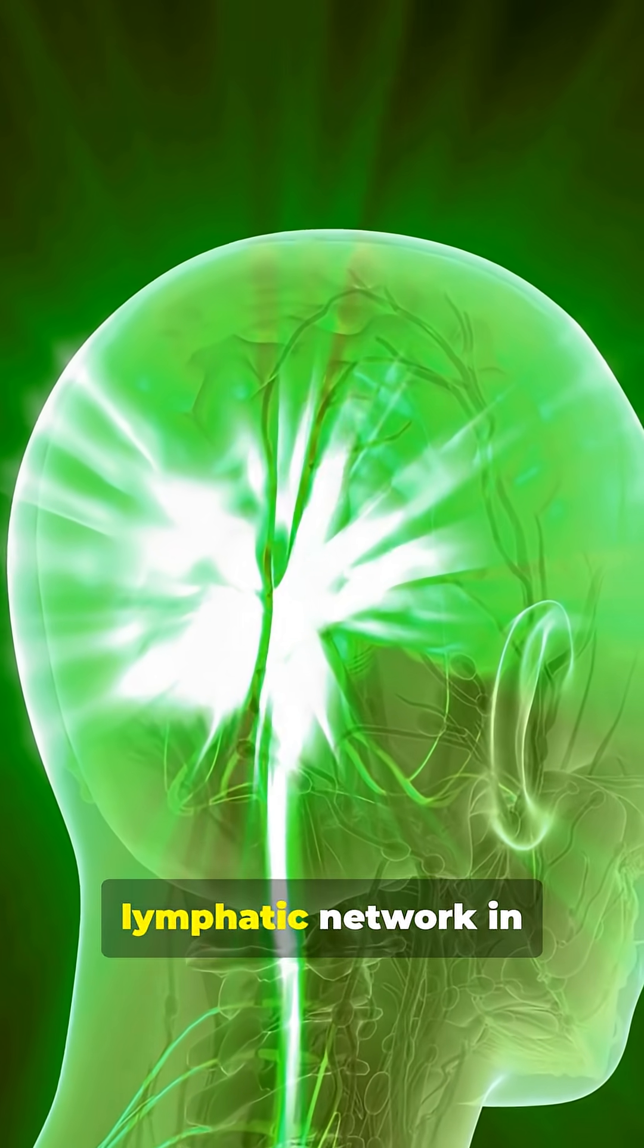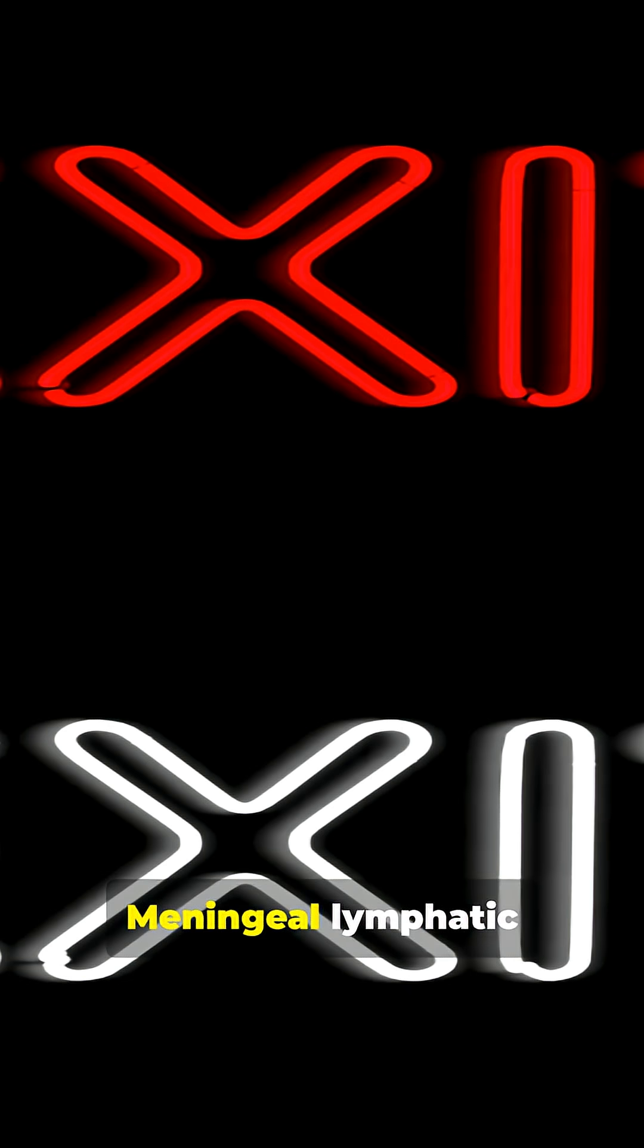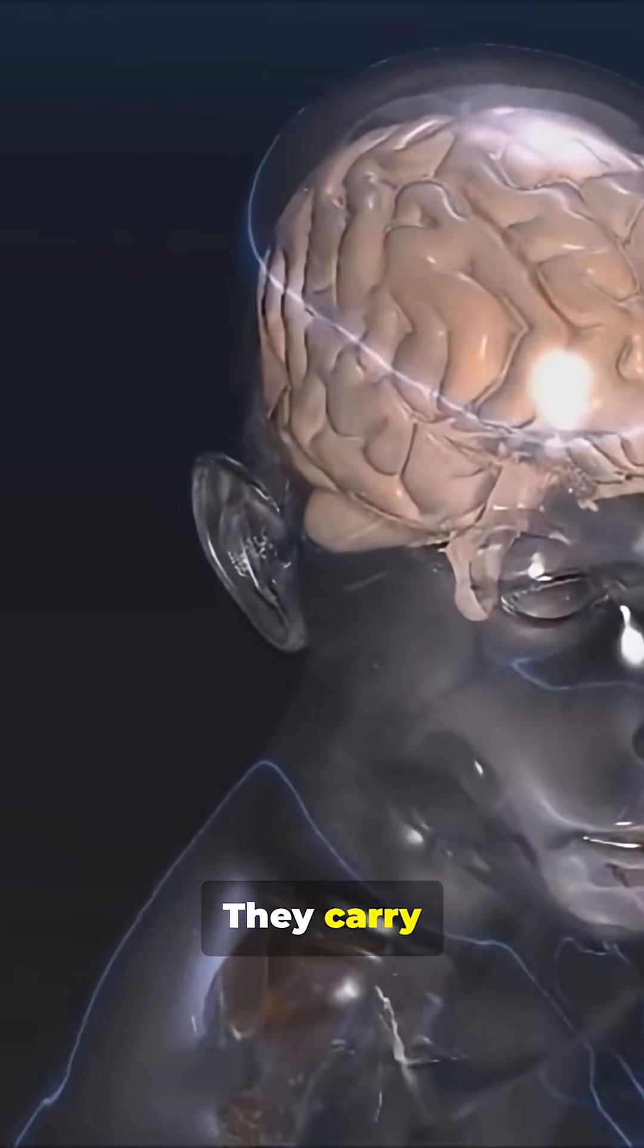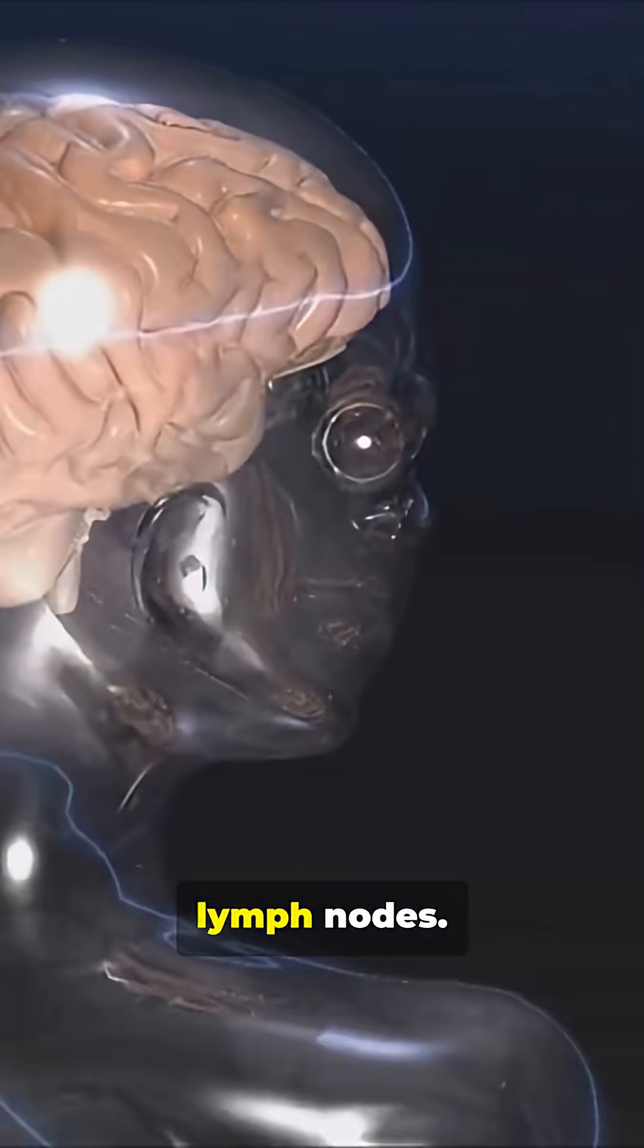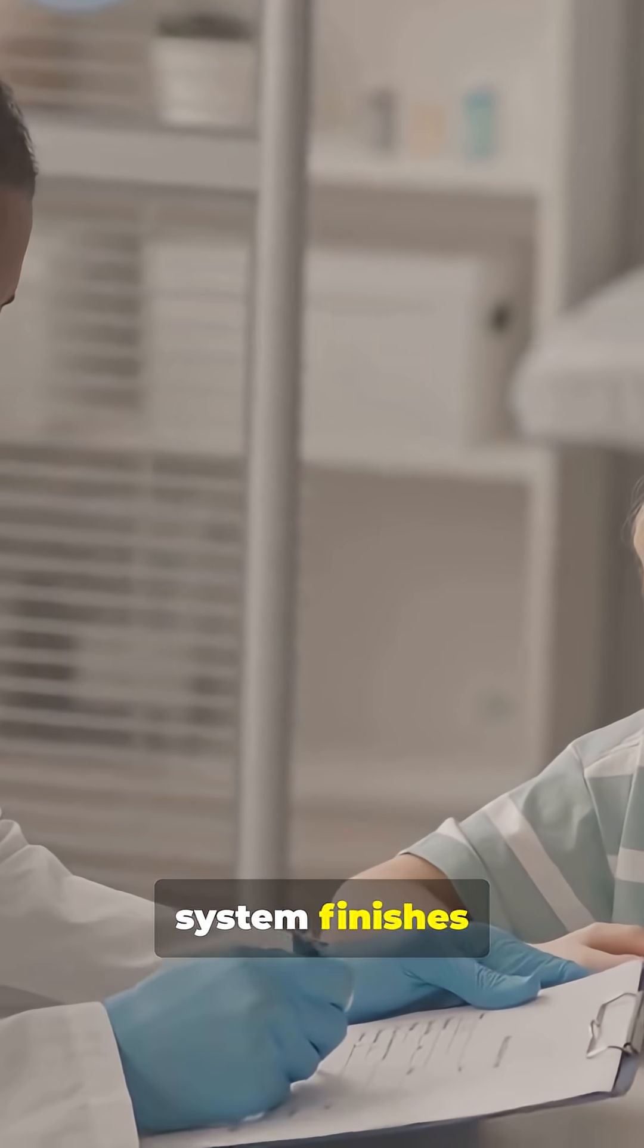There's also a traditional lymphatic network in the meninges. Meningeal lymphatic vessels act like the city's exit ramps. They carry collected waste out toward the lymph nodes. There the immune system finishes cleaning the load.